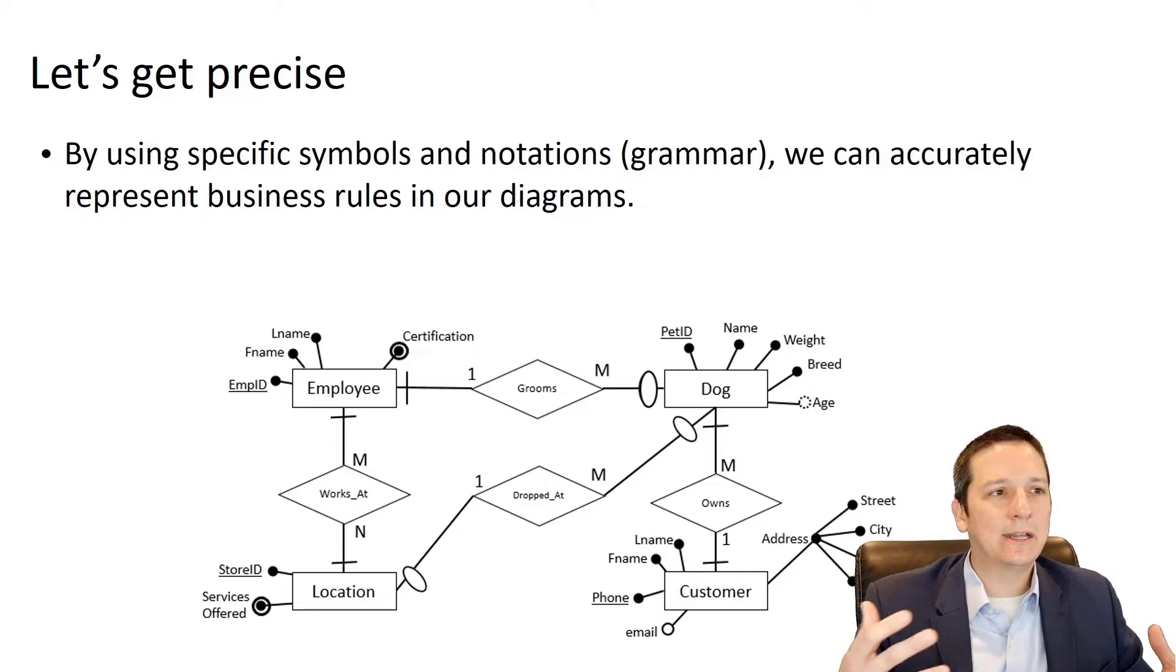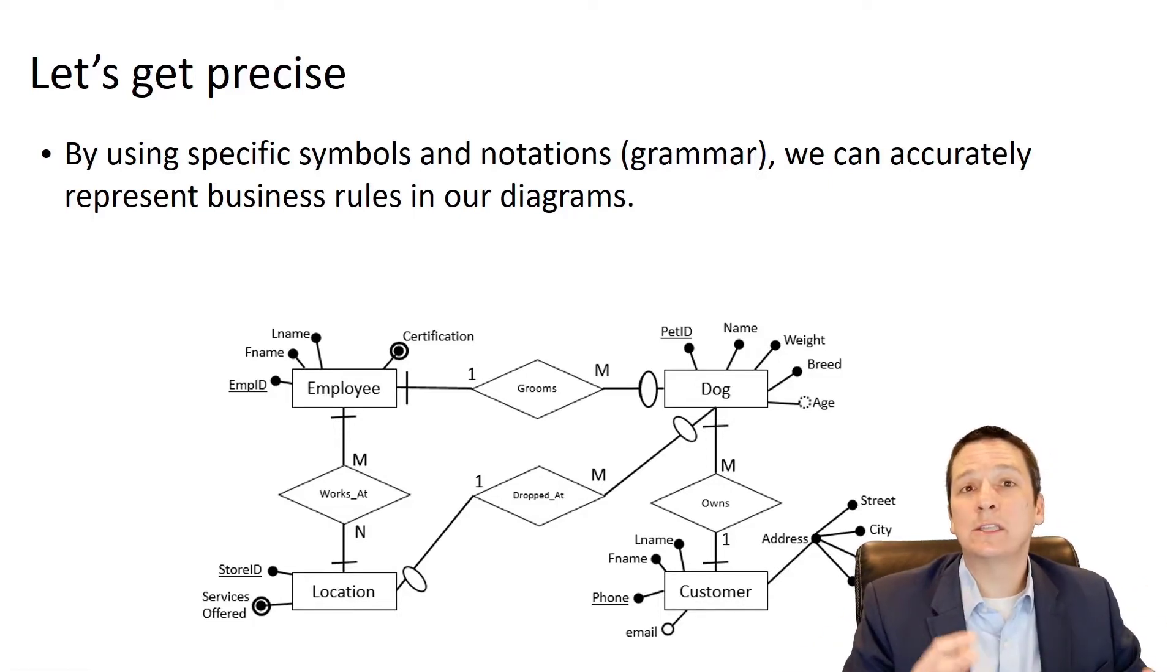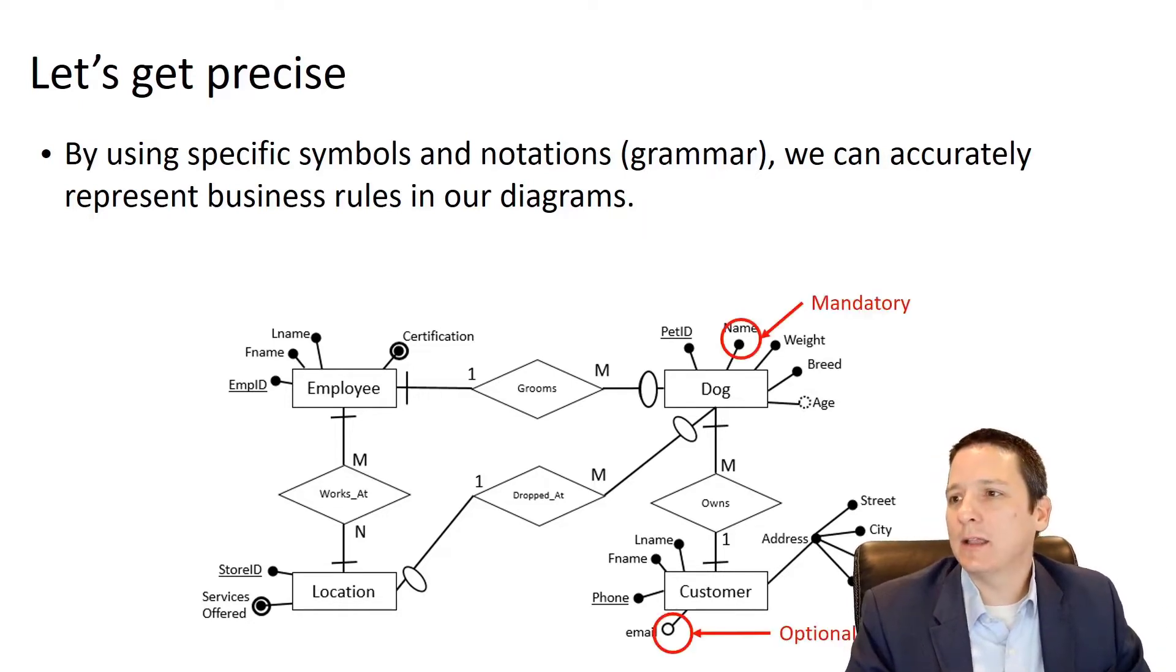And then we extended it a little bit further and said, well, all of these entities have attributes and there are other structural constraints around participation and cardinality and all of these other more detailed, more nuanced things that describe the story. So this is what we're going to be learning about tonight in class.